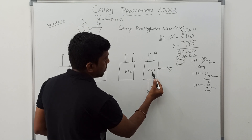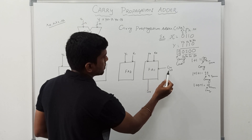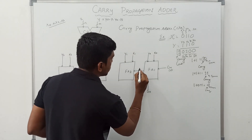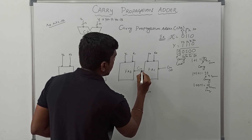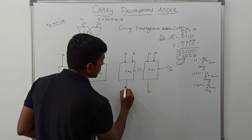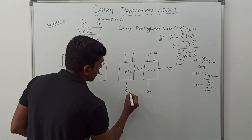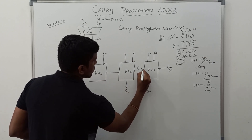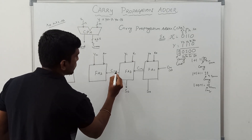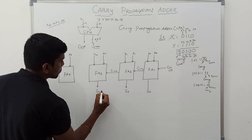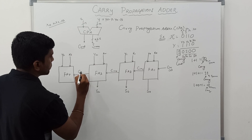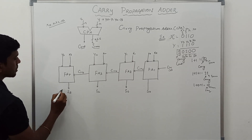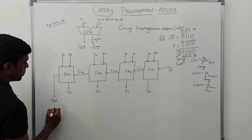Each full adder circuit takes three inputs: x, y, and a carry-in (cin). The x0, y0, and cin produce output sum S0 and a carry that is propagated to the next full adder. Full adder 2 gives result S1, and its carry propagates to full adder 3 as cin2. Full adder 3 gives output S2 and its carry propagates as cin3. Finally, full adder 4 gives sum S3 and the final carry out cout.